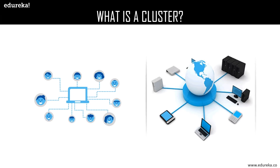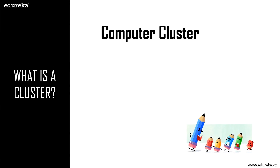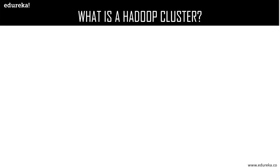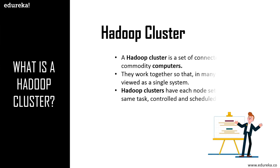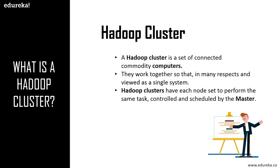Before getting started with Hadoop cluster, let us understand what a basic computer cluster is. A cluster basically means a collection. A computer cluster is a collection of interconnected computers which are capable of communicating with each other and working on a given task as a single unit. Similarly, a Hadoop cluster is a collection of commodity hardware — computers and servers — interconnected with each other, working together as a single unit. A Hadoop cluster has a master and numerous slaves; the master assigns tasks and guides the slaves.